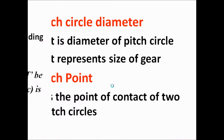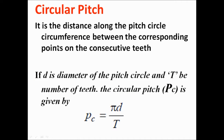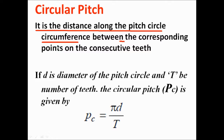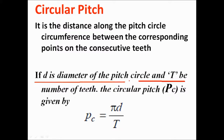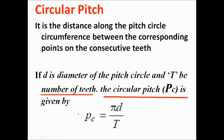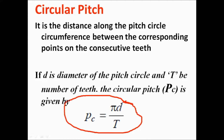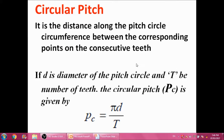The next term is circular pitch. Circular pitch is the distance along the pitch circle between corresponding points of adjacent teeth. If D is the pitch circle diameter and T is the number of teeth, then circular pitch p_c is equal to πD/T. Then, diametral pitch — diametral pitch is the ratio of the number of teeth to the pitch diameter, and it is the reciprocal of the module.